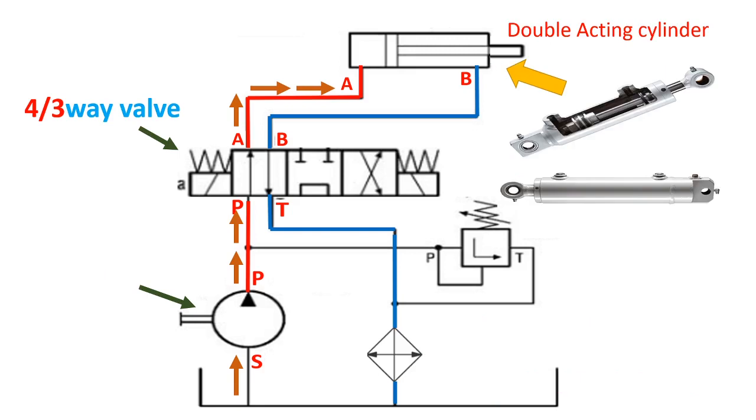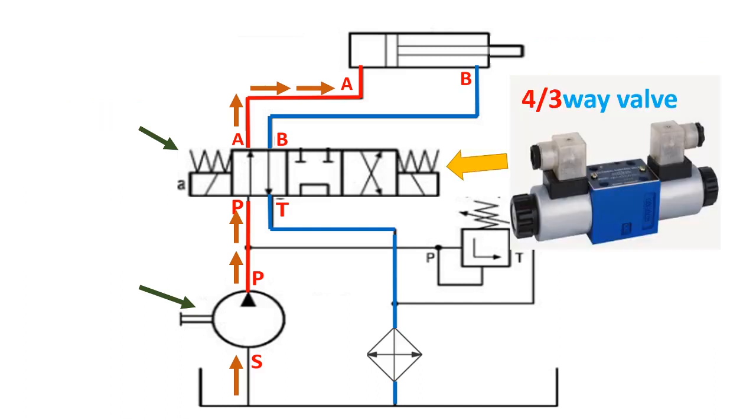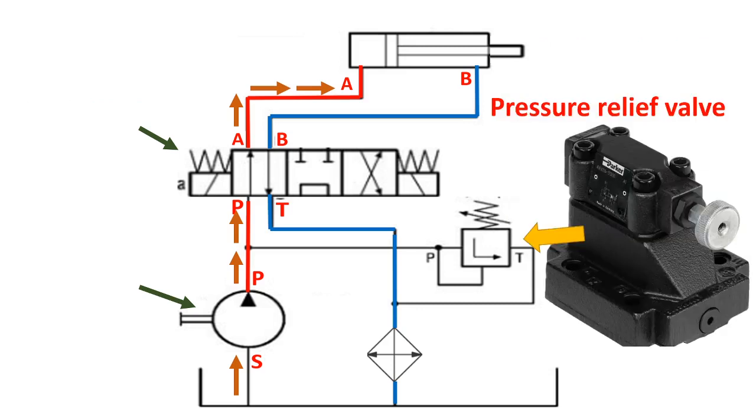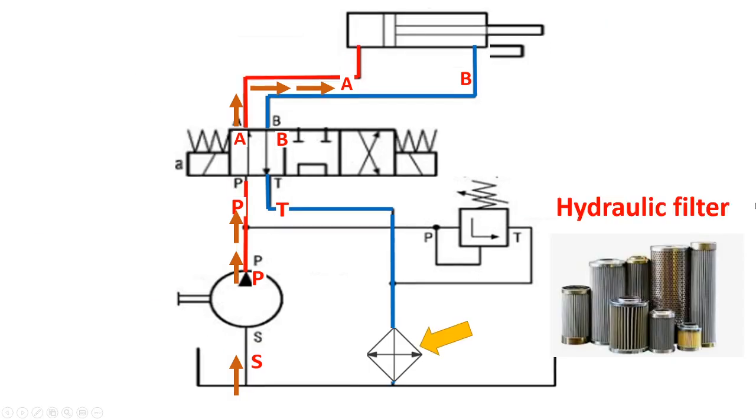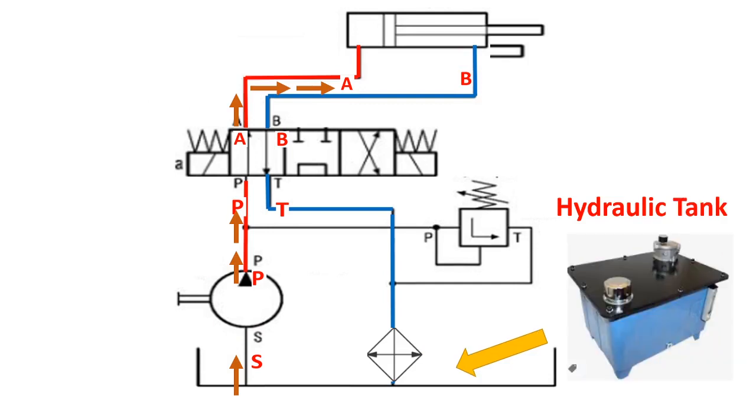Now let's discuss the components of hydraulic systems. This is the symbol and actual picture of double acting cylinder, four three-way directional control valve, pressure relief valve, hydraulic pump, hydraulic filter, and hydraulic tank.